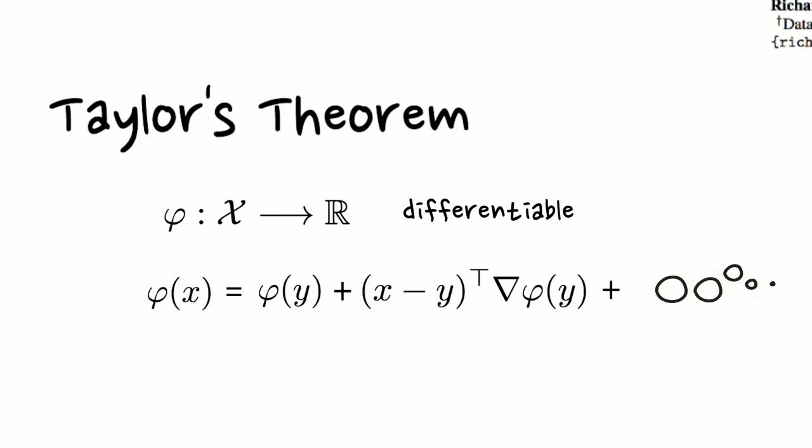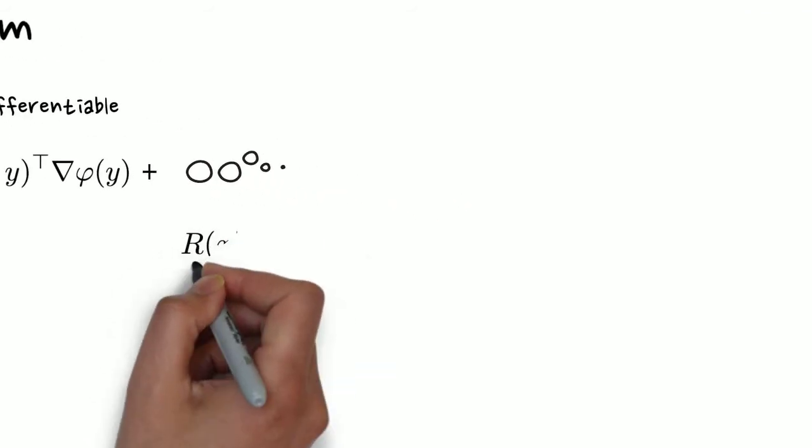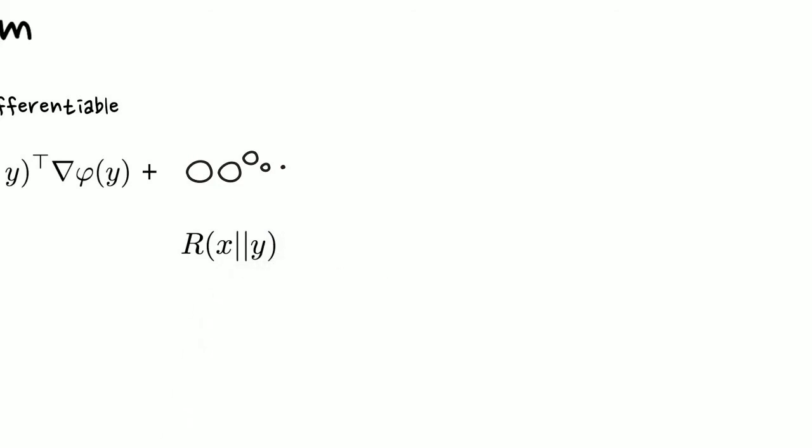Focusing on the residual, we can re-express all the other terms in terms of this residual. This is the Bregman distortion.